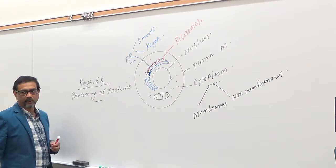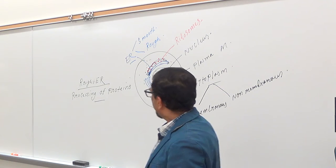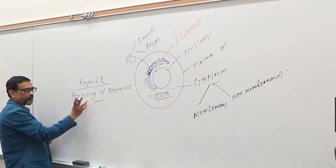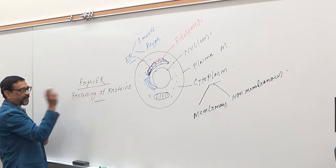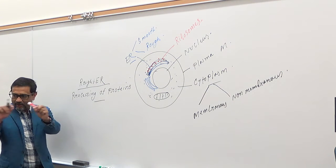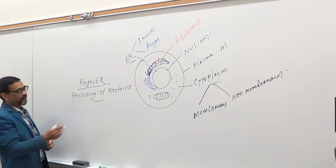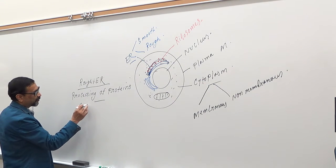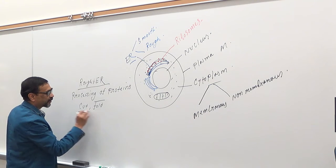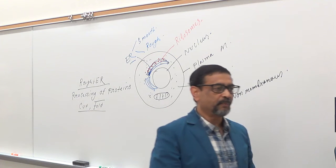Processing of proteins means: after the protein is produced, if the protein chain is too long, the rough ER will cut the protein or fold the protein. So cutting and folding — those are the processing of proteins done inside the rough ER.